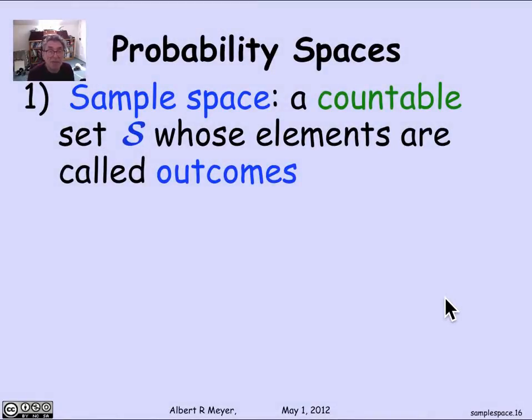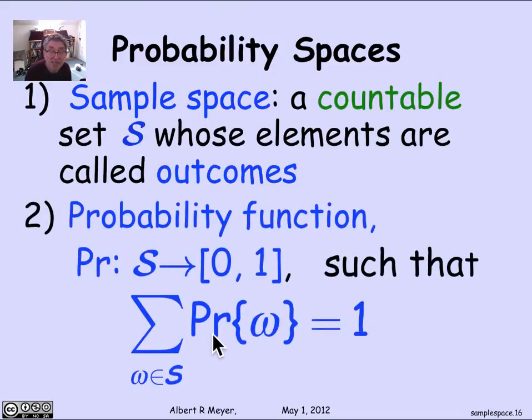To summarize, the key concept here is a probability space. It consists of a countable set of outcomes, the sample space, and a probability function that assigns values between 0 and 1 to every outcome such that the sum of the probabilities is 1.